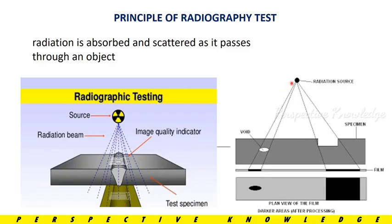We apply the radiation source, which spreads as a beam through the material, and we capture the image on a film. If there is a hole or void, it appears in black color on the film. By analyzing the film image, we can identify problem areas — dark shades indicate no material issues, and defects appear as distinct contrast differences.